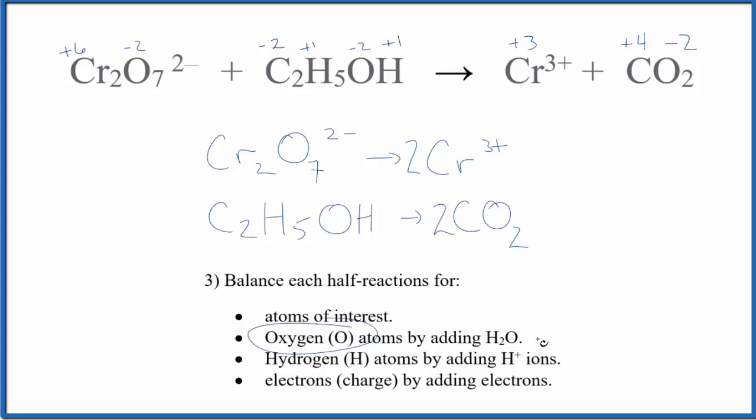Next we need to balance the oxygen atoms on each side by adding H2O water. Here I have seven oxygen atoms, so I need to add seven water molecules over here. Now I have seven oxygen atoms on both sides. Down here I have one oxygen atom, here I have two times two, that's four. So I need to add three water molecules here, so I have four oxygen atoms on both sides.